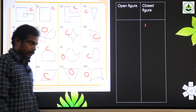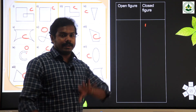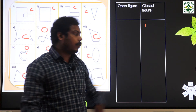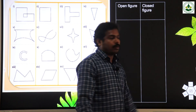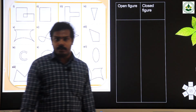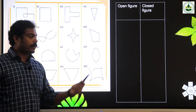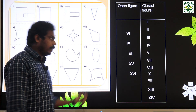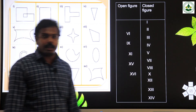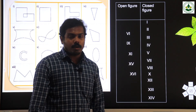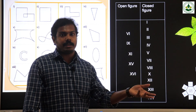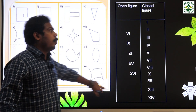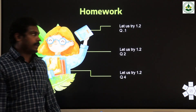So what is an open figure? If you have different ending and starting points, then it is called an open figure. A figure that has the same starting point and ending point is called a closed figure. Different starting point and ending point means it is called an open figure.